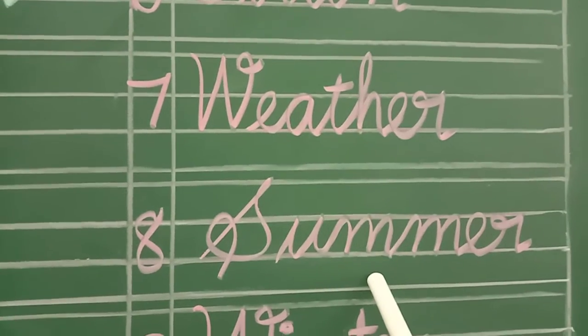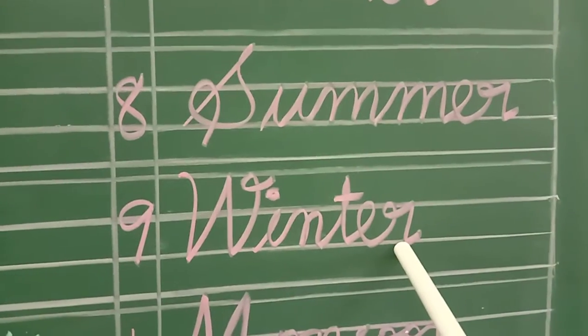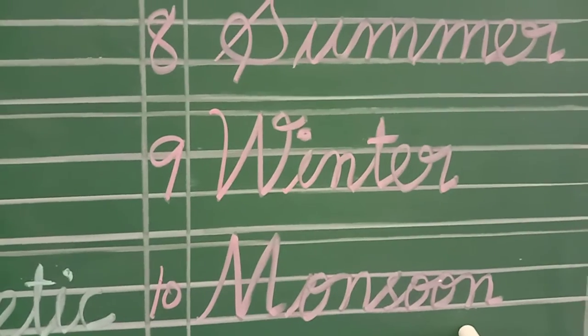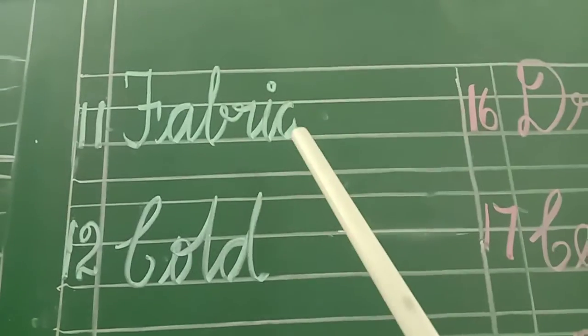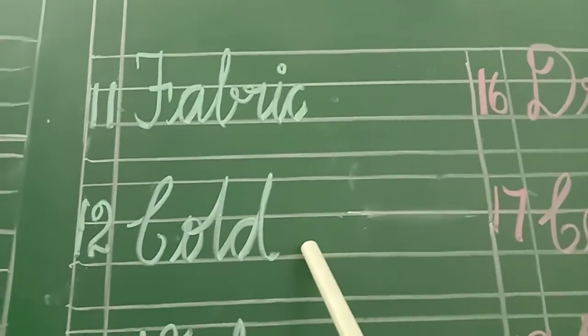Summer - Koolai Kalam. Winter - Kulir Kalam. Monsoon - Paruva Malai. Fabric - Thuny. Cold - Kulir.